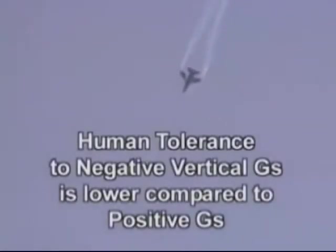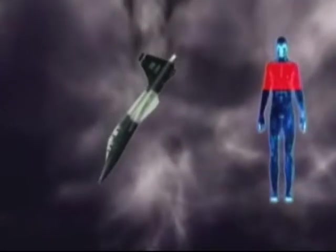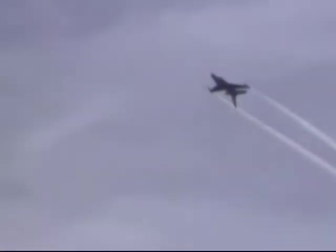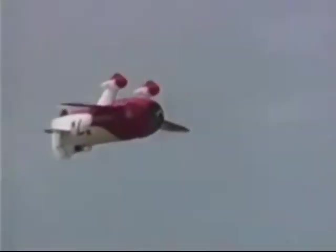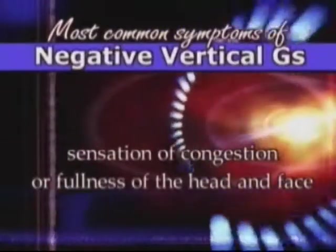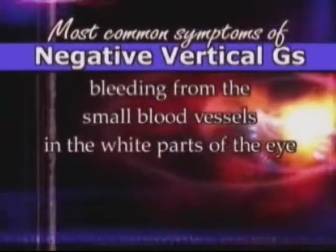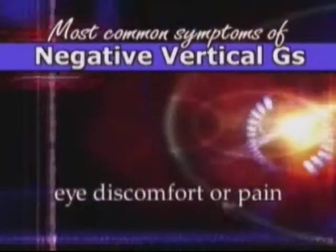Human tolerance to negative vertical G's is lower when compared to positive G's. Most symptoms associated with exposure to negative vertical G's are the result of increased blood flow to the upper body — the blood is pulled from your lower body into your chest, upper extremities, and head. The symptoms are similar to those experienced when your body is in an upside-down position, but the severity is much greater. The most common symptoms include sensation of weightlessness, sensation of congestion or fullness of the head and face, swelling of the face, headache, bleeding from the small blood vessels in the white parts of the eye, eye discomfort or pain, and mental confusion.